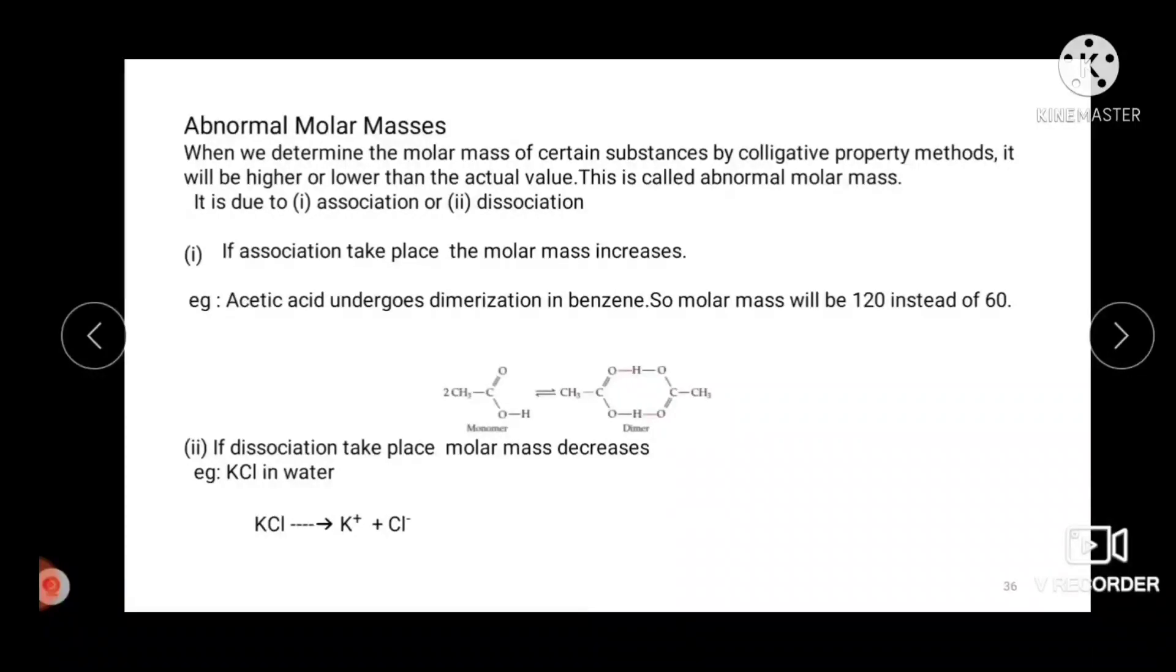For example, when benzoic acid or acetic acid dissolved in benzene, it undergoes dimerization due to intermolecular hydrogen bonding. So reduction of number of acid molecules takes place. The colligative property also correspondingly reduced. So molar mass will be 120 instead of 60.